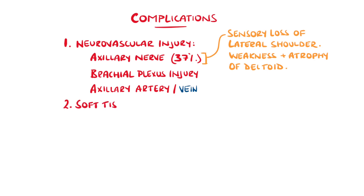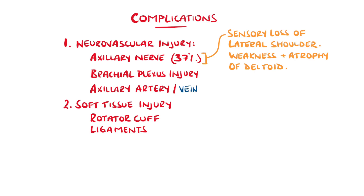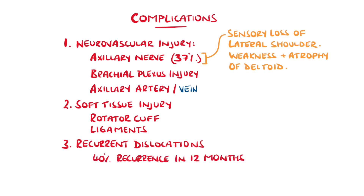Soft tissue injuries are common, including rotator cuff tears and damage to the ligaments, which can lead to shoulder instability and recurrent shoulder dislocations. Around 40% of traumatic anterior dislocations will experience a recurrence within one year.